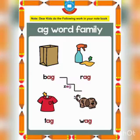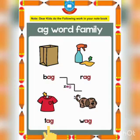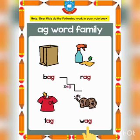Let's start. B, A, G — bag. R, A, G — rag. Z, A, G — zag. T, A, G — tag. W, A, G — wag. Very good.